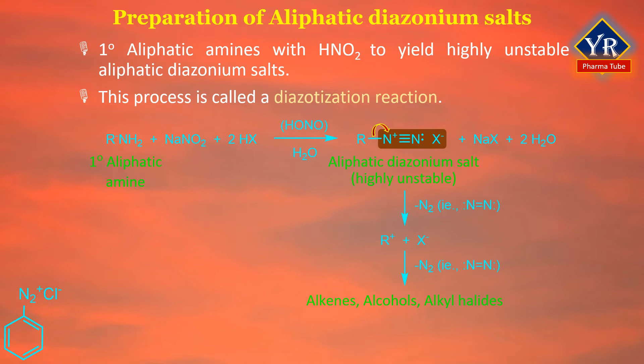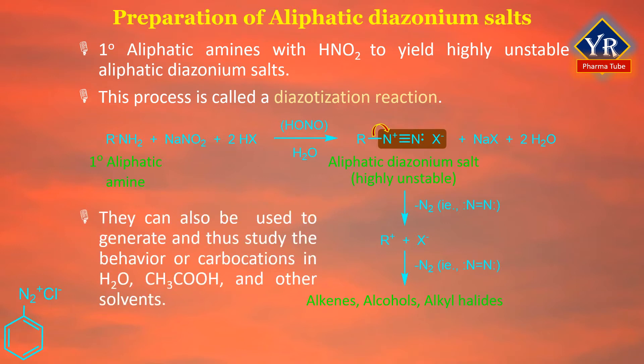Even at low temperatures, aliphatic diazonium salts decompose spontaneously by losing nitrogen to form carbocations. The carbocations go on to produce mixtures of alkenes, alcohols, and alkyl halides through removal of a proton, reaction with water, and reaction with halide. Diazotization of primary aliphatic amines is of little synthetic importance because they yield a complex mixture of products. However, since evolution of nitrogen is quantitative, this reaction is used in some analytical procedures and to study carbocation behavior in solvents.